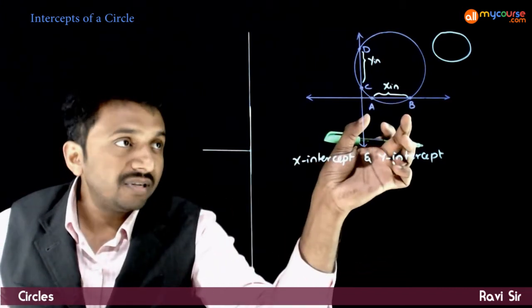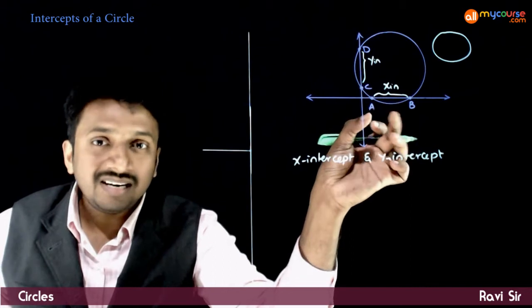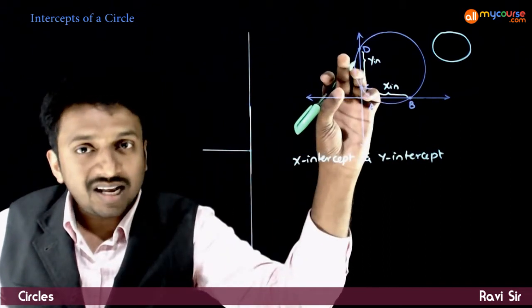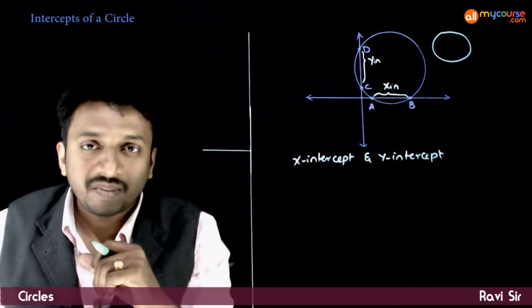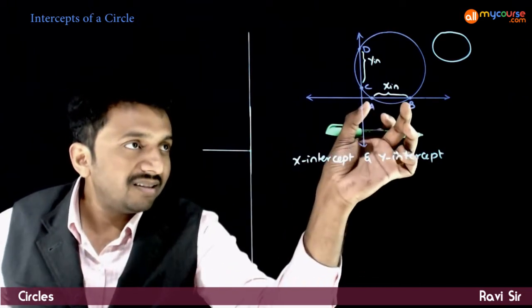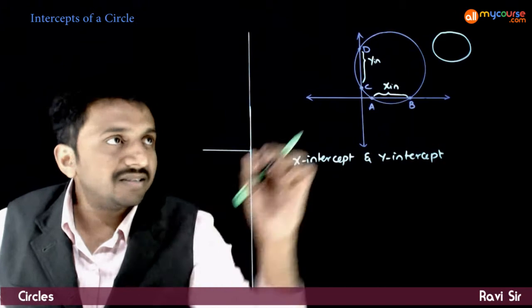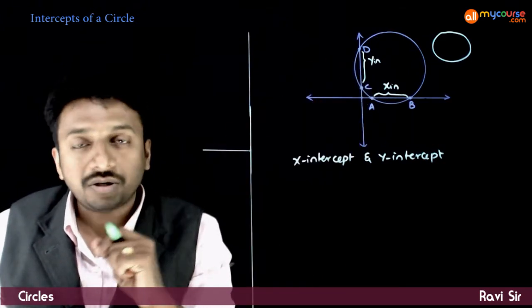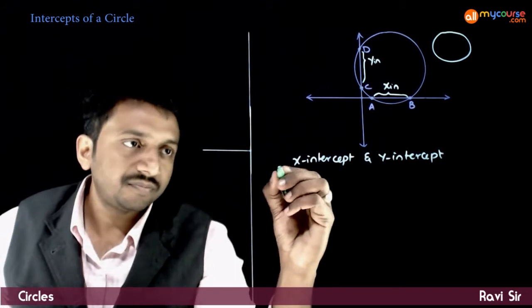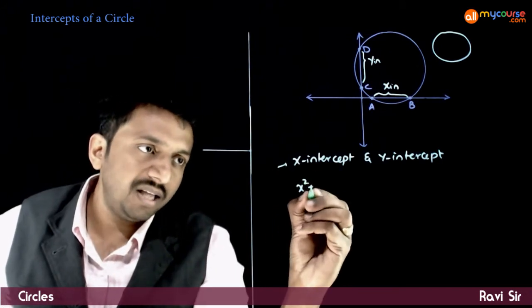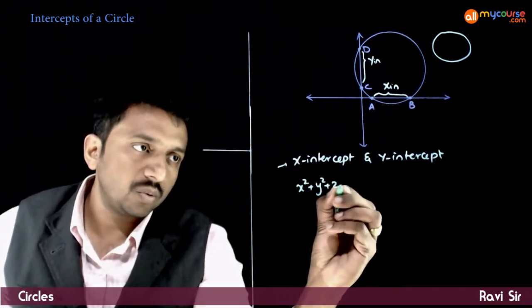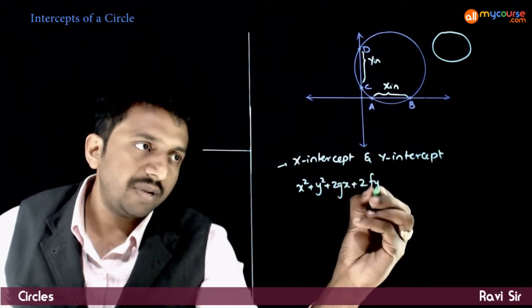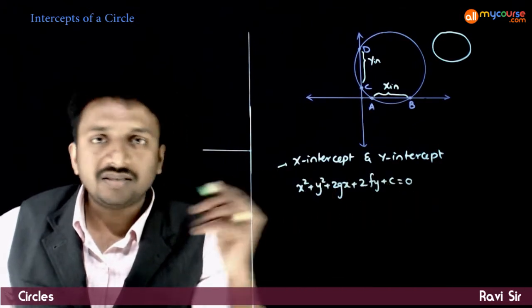Intercepts are defined only if the circle touches or cuts the respective axis. Now, how do we find the x-intercept and y-intercept if the equation of the circle is given? Let the circle be x² + y² + 2gx + 2fy + c = 0.